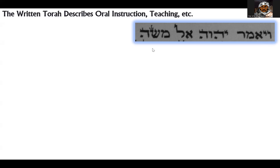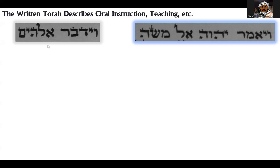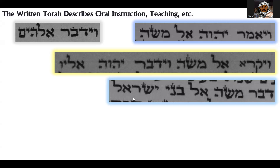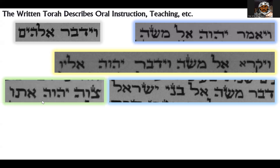There are always places where it says 'Elohim said.' There's also, for example, the beginning of the book of Vayikra, where it essentially says Hashem called to Moshe and said to him. It says that Moshe spoke to the people of Israel, and Hashem gave a mitzvah — commanded something.